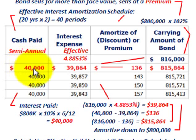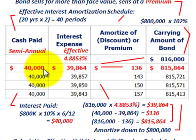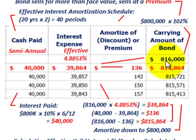The actual semi-annual cash payment was $40,000 — that's $800,000 times 10% times 6/12 months. To determine the amount we amortize, take the cash payment of $40,000 minus the interest expense of $39,864, giving us $136. That's the portion of the $16,000 premium amortized in the first period. Then the new carrying amount is $816,000 less $136, giving us $815,864.